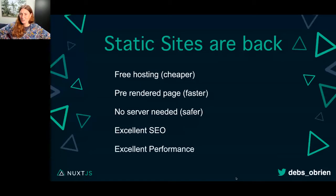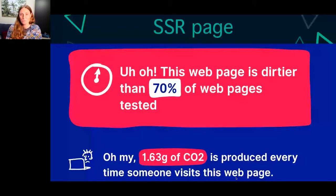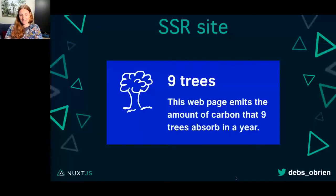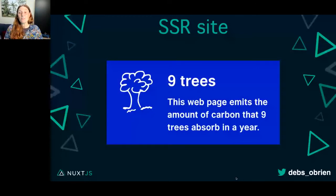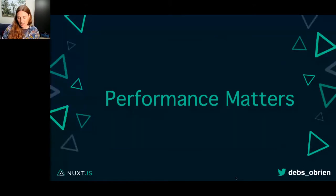Being greener matters: the IT sector already consumes an estimated 7% of global electricity. You can test your page's carbon footprint — I tested a server-rendered page that was dirtier than 70% of webpages tested, producing a lot of CO2. Nine trees is what it takes for that one webpage's carbon to be absorbed in a year. But Space Jam from the 90s is cleaner than 95% of webpages tested. They were doing it right all this time.